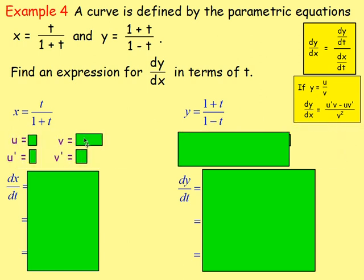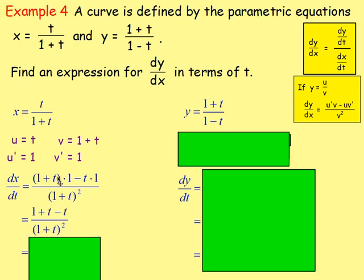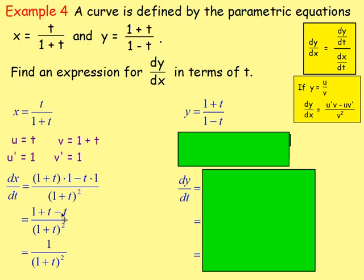For the quotient rule on x: u equals t, v equals 1 plus t; u-dash equals du/dt equals 1, and v-dash equals 1. So dx/dt equals u-dash v minus u v-dash over v squared: that's 1 times (1 plus t) minus t times 1, all over (1 plus t) squared. Expanding the numerator gives 1 plus t minus t. The plus t and minus t cancel, leaving 1. So dx/dt equals 1 over (1 plus t) squared.